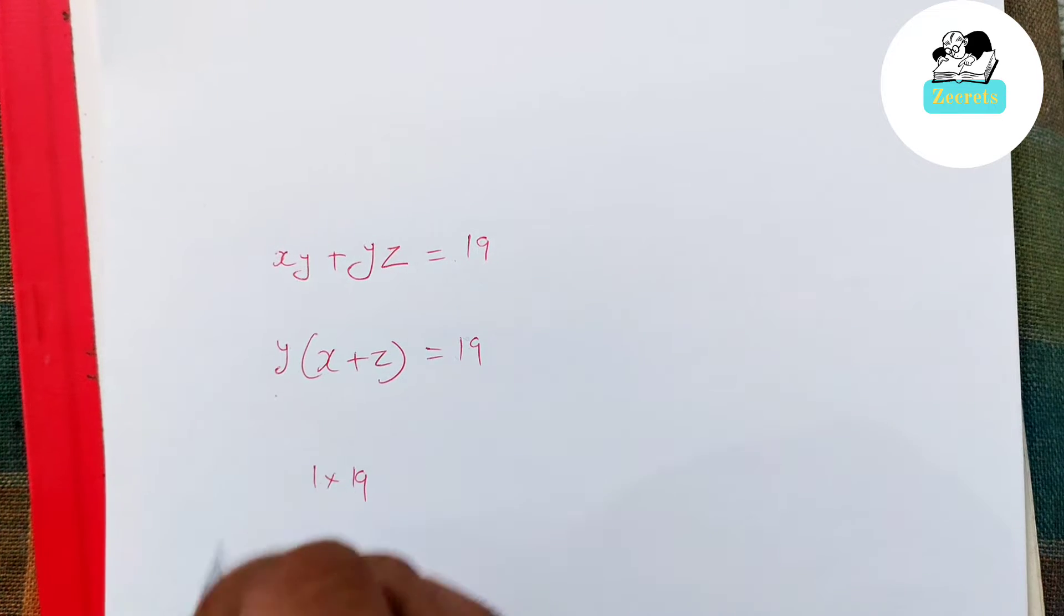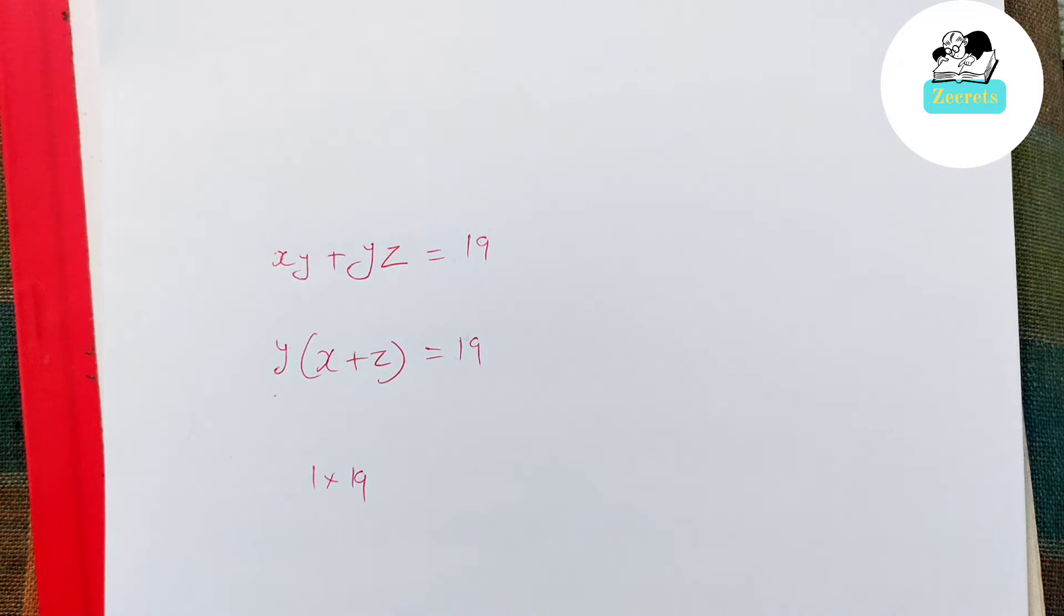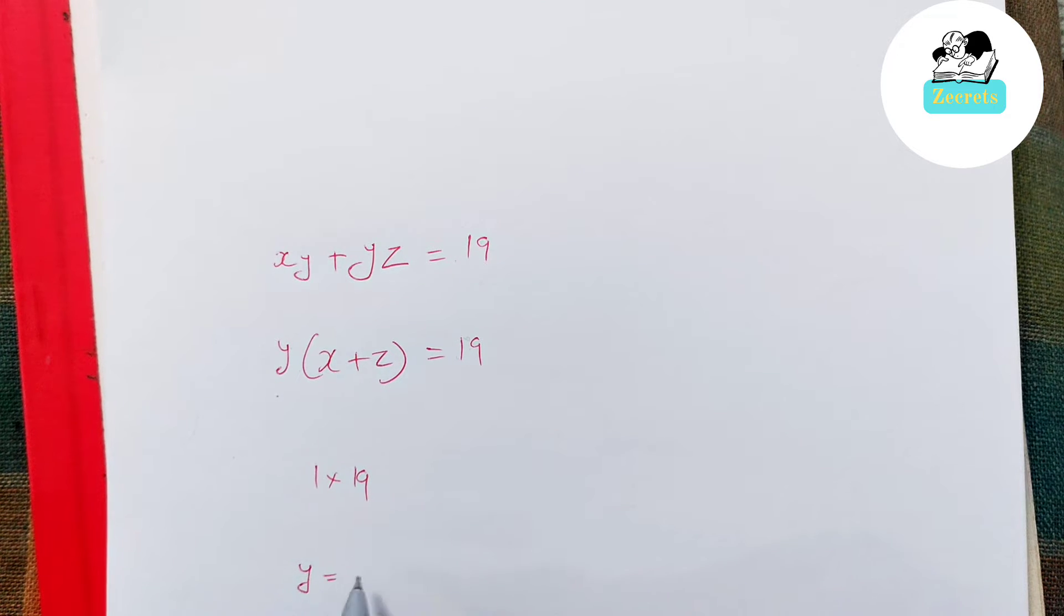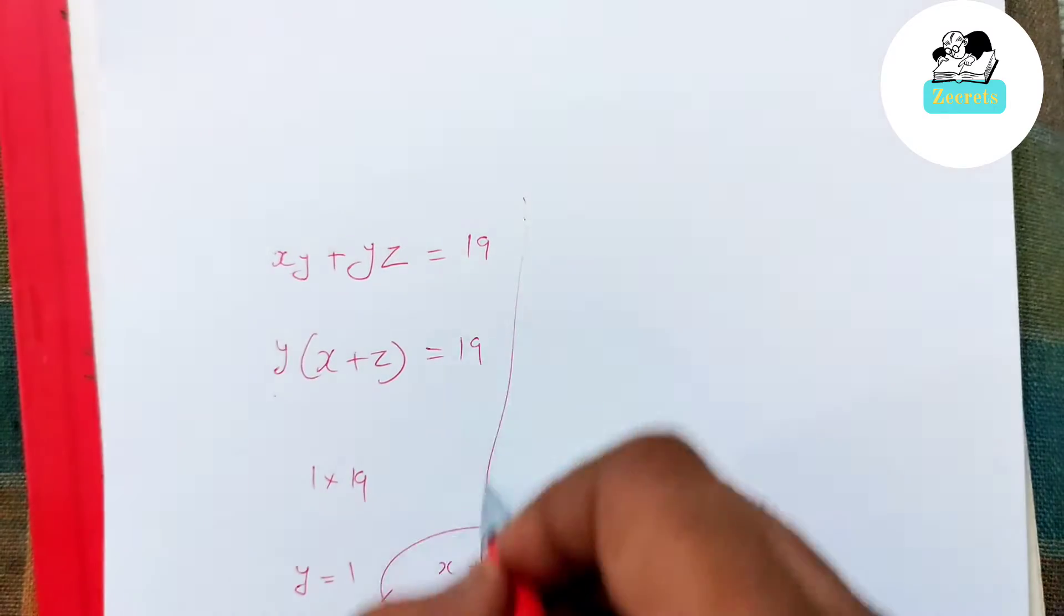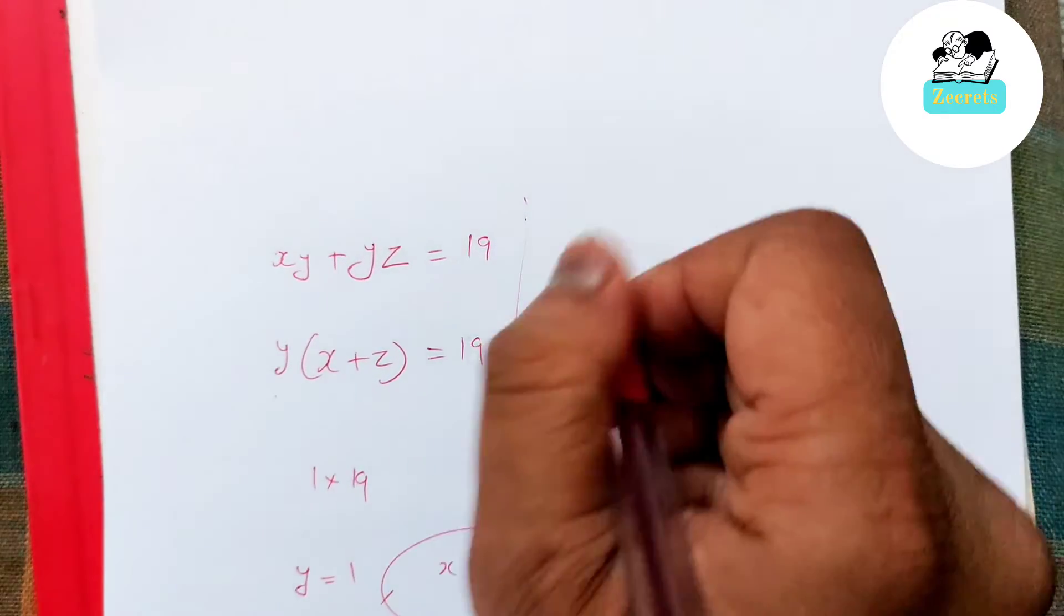So either y will be 19 or y will be 1. But if I take y as 19, then x plus z would have been 1, which is not possible because they are natural numbers and one value cannot be zero. I'll take y as 1 and x plus z as 19.